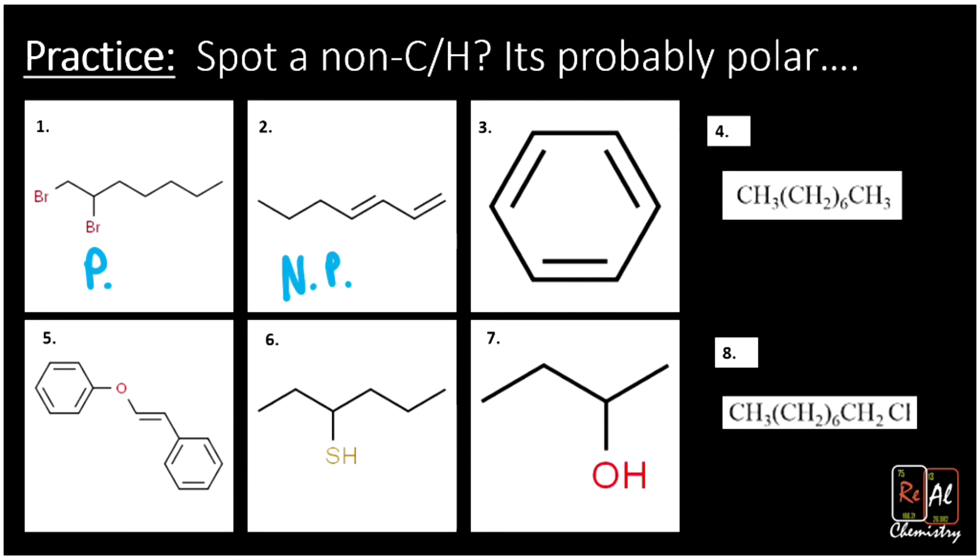We look at molecule three, benzene. It has those double bonds alternating around that ring, but still only carbon and hydrogen. So it's going to be nonpolar. We get to molecule four. And a molecule like this can really throw people off because it's written as a condensed structure. But still, we just kind of scan through and we see, hey, you know what? There's only carbon and hydrogen there. So that's still going to be nonpolar.